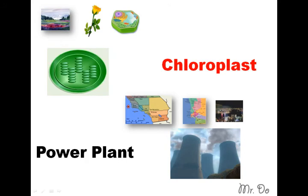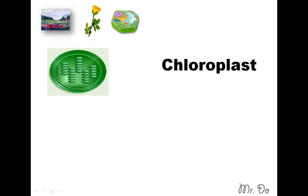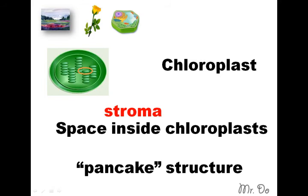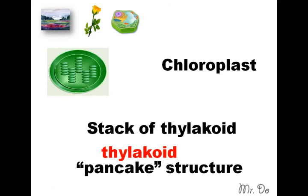In the chloroplast, there are many structures that produce the energy needed — just like in a power plant, there are many structures that produce the electricity that the city needs. The space inside the chloroplast is called a stroma. The pancake structure — one of them — is called a thylakoid. The whole stack of thylakoids is called a grana.